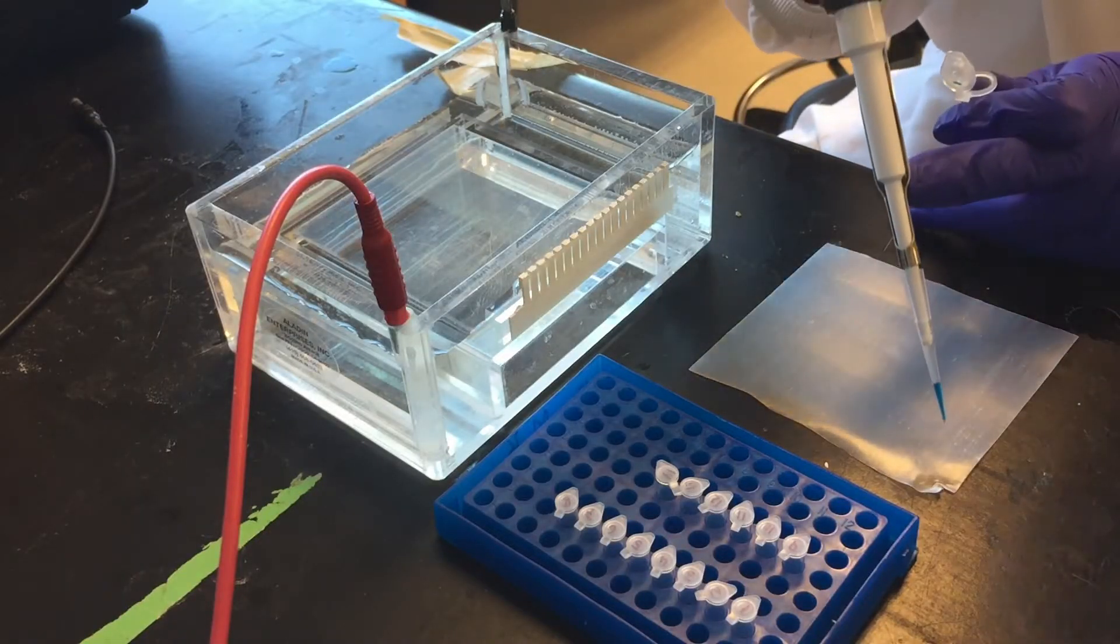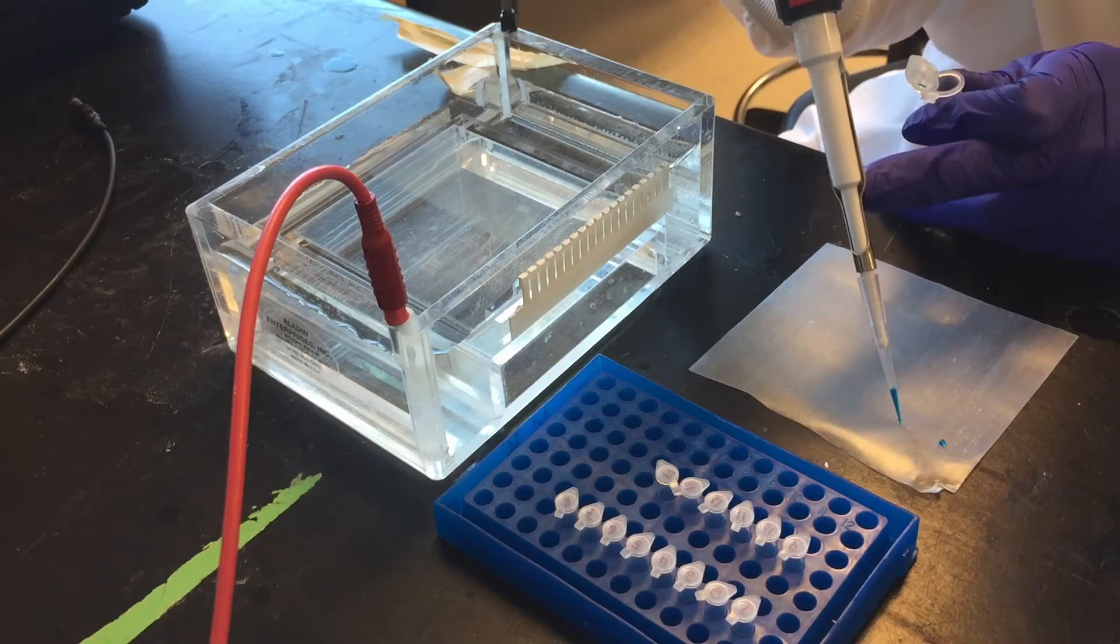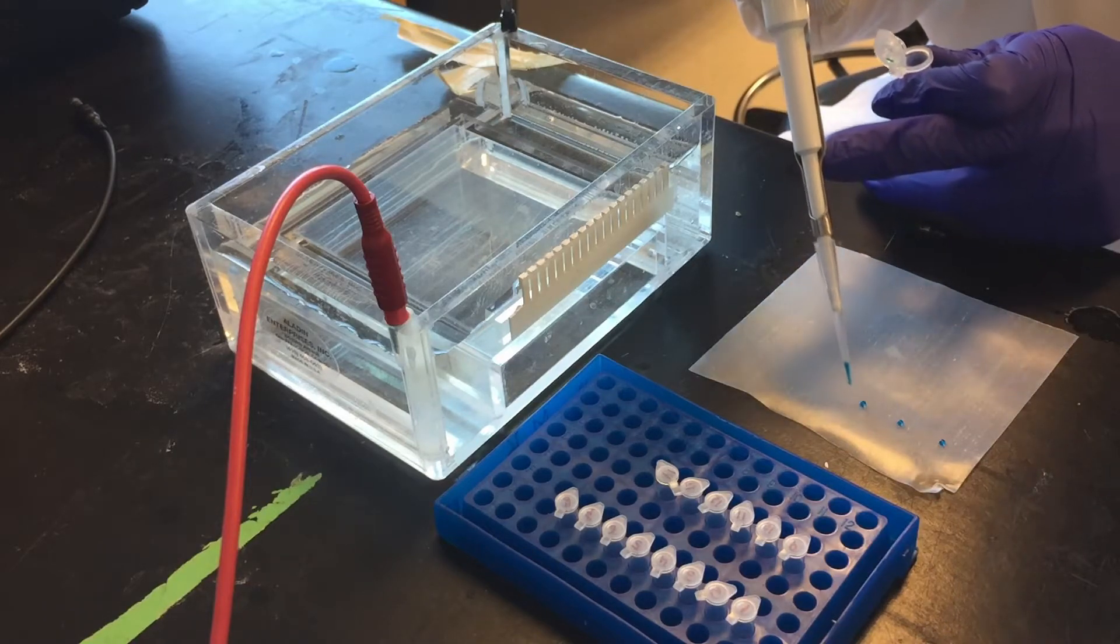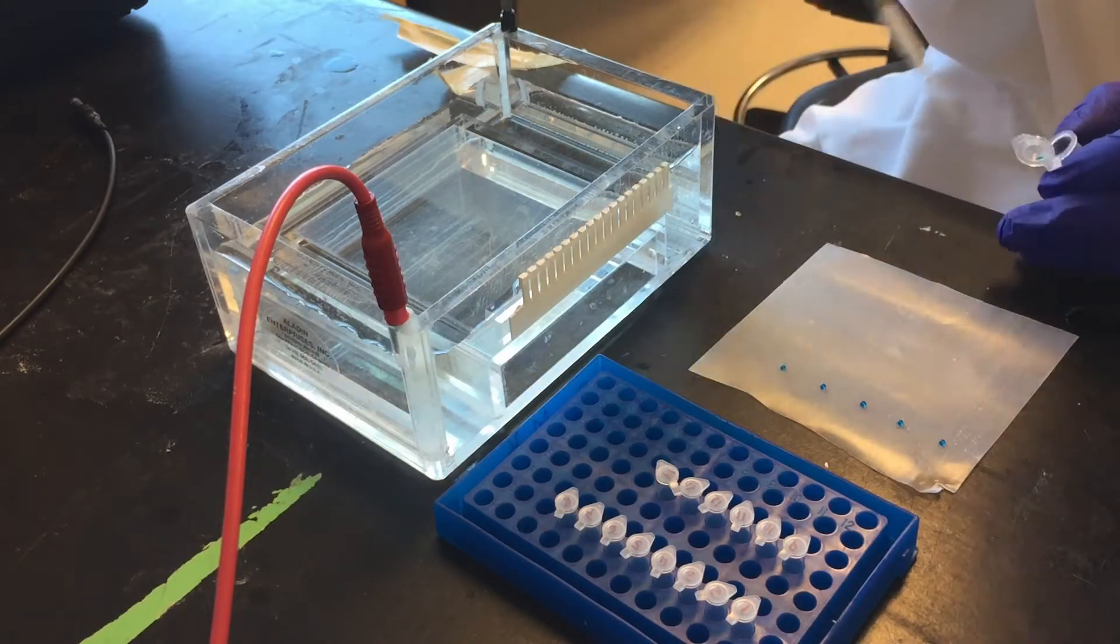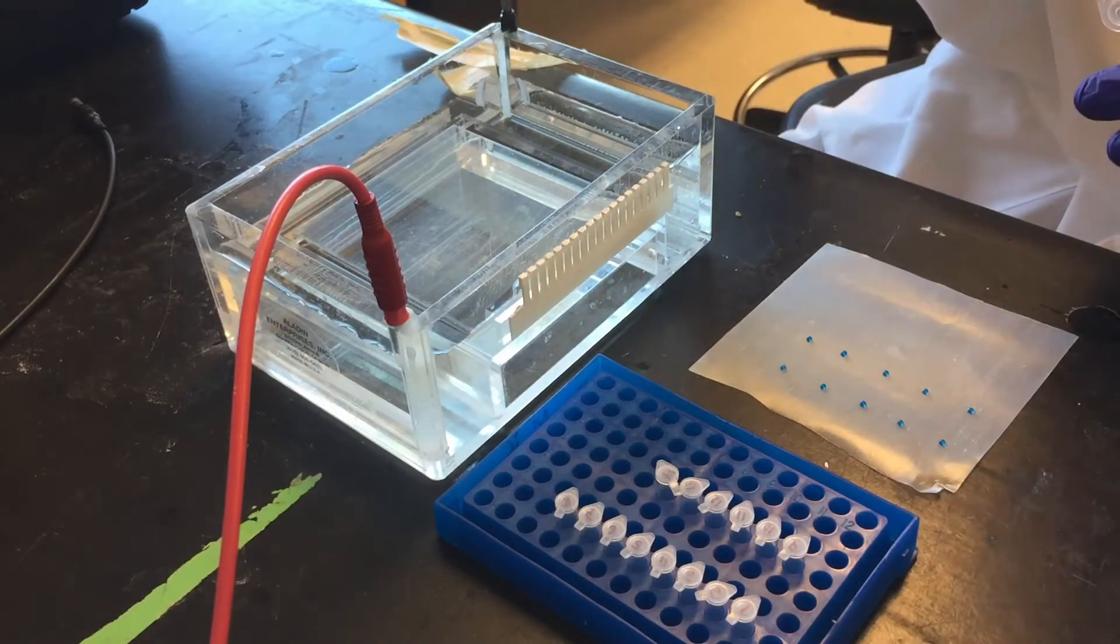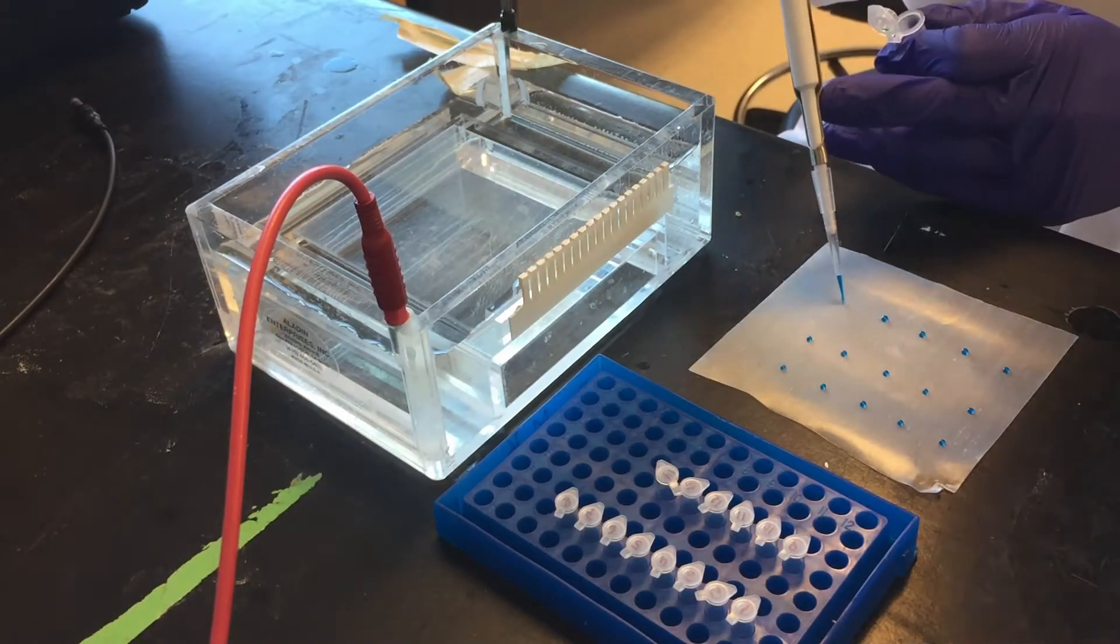And I like to use this method where we put loading dye in little drops on parafilm so we can basically just mix and load the samples immediately using the second stage of the pipette.